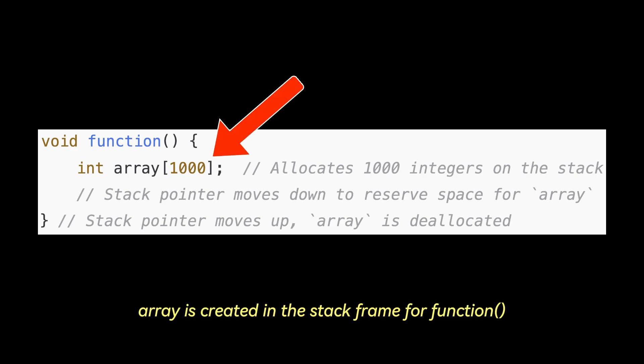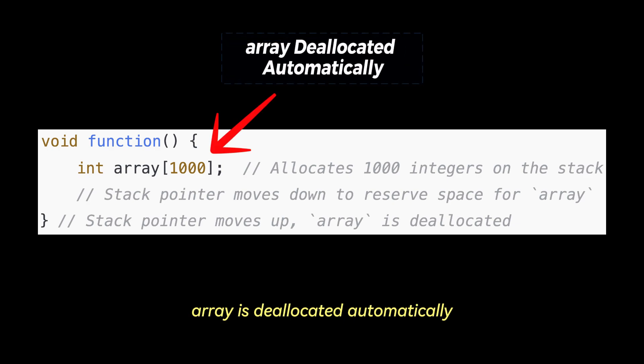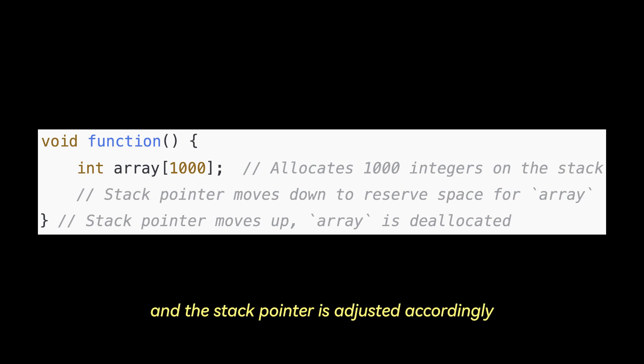In this example, an array is created in the stack frame for a function. As soon as the function completes, the array is deallocated automatically, and the stack pointer is adjusted accordingly.